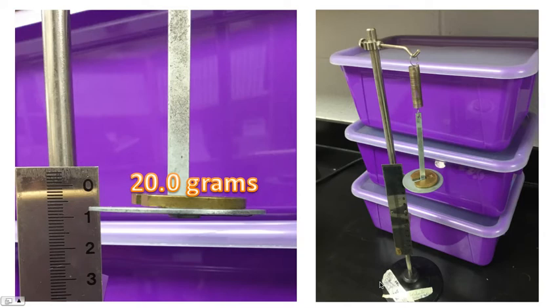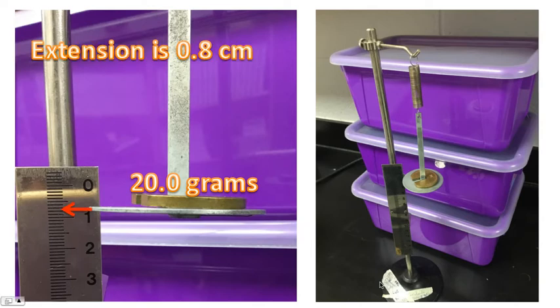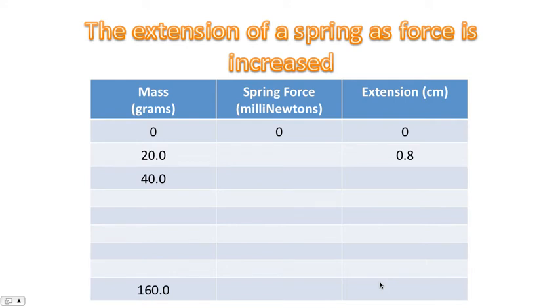So here's our first data point. Each of those weights has a mass of 20 grams. And looking at the ruler, the extension for this first data point is 0.8 centimeters. This is the table I'd like you to complete. Please ensure that you copied the title of the table. Notice that the mass goes up in increments of 20 grams. We're going to go all the way to 160 grams. Please fill in the entire table.